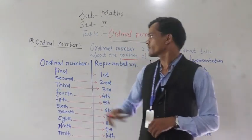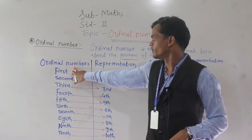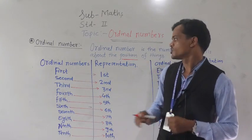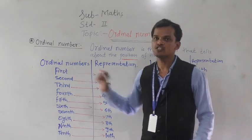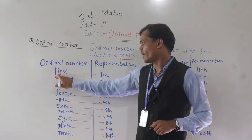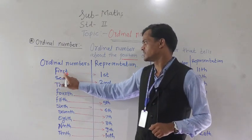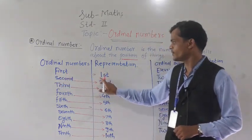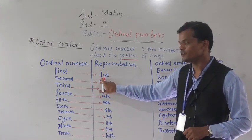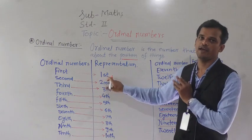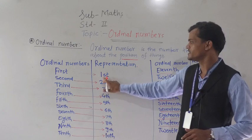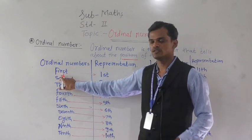Now students, we will see ordinal numbers and their representation. The first ordinal number is 'first,' spelled F-I-R-S-T. The representation is: write 1, and after that write S-T. So this is the representation of first — written as 1st.